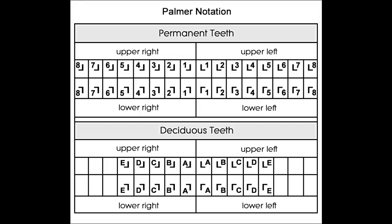Similarly, the teeth in the second quadrant — central incisor to third molar on the left side of the upper jaw — will be numbered 21, 22, 23, 24, 25, 26, 27, and 28. The adult teeth in the third and fourth quadrants would be numbered from 31 to 38 and 41 to 48 respectively.